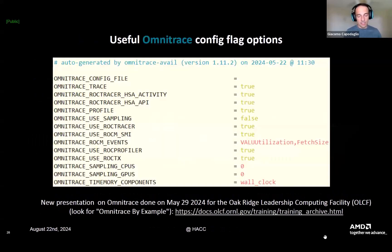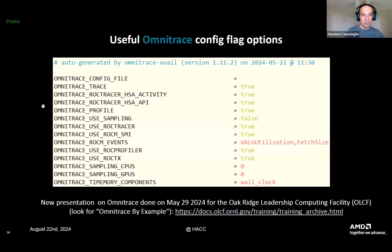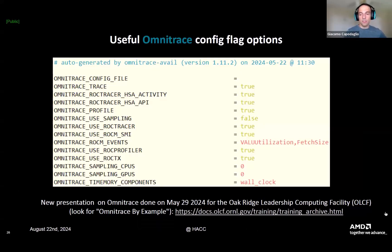This is an example of what an Omnitrace config file looks like. You can specify different types of activity such as HSA or HIP. You can simplify your traces by setting sampling GPUs and CPUs to zero to get less information. There are many other options you can play with. If you're interested, there is a talk that a member of our team did for Oak Ridge that goes into a lot more detail on Omnitrace — you can find it at the link shown here.